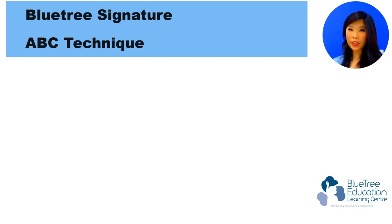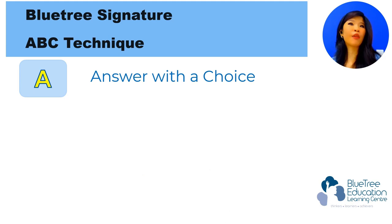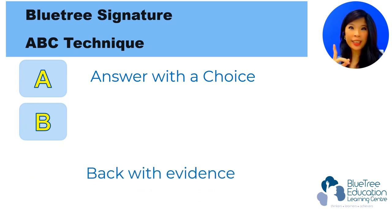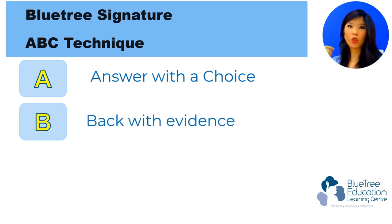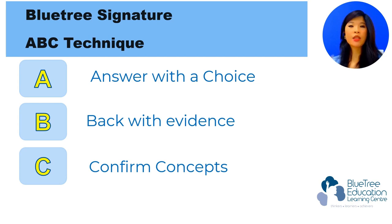Before we head to any questions, let's go through our Blue Tree signature ABC technique. Do you all remember what the ABC technique is? A represents answer with a choice. If the question asks you for a choice, give an answer. Do you remember what is B? B is back with evidence. So, it's what you can see and answer according to the question. And C is confirm concepts. Certain questions will require you to write certain concepts. So, do remember to write ABC, alright?